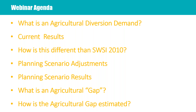Today I want to lay out: first, what is an agricultural diversion demand and how it is different from previous SWSI efforts; then we will look at current results, which serve as the foundation for comparisons to the planning scenarios; next, we will look at planning scenario adjustments and the factors used to adjust the agricultural diversion demands for future planning scenarios; we will go through high-level planning scenario results; and then briefly discuss what we are considering as the agricultural gap and how we are trying to estimate that gap using modeling tools.